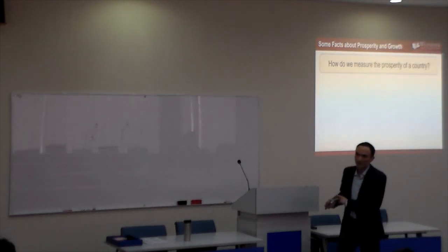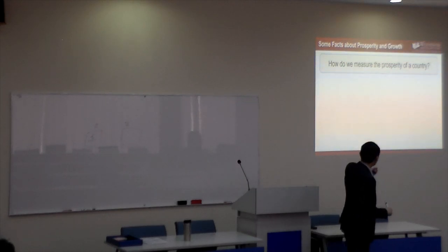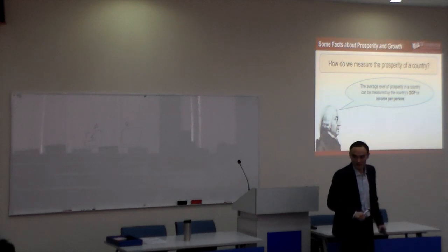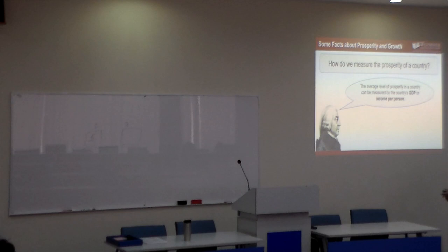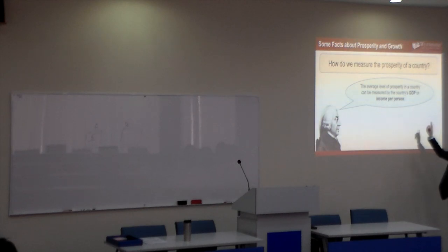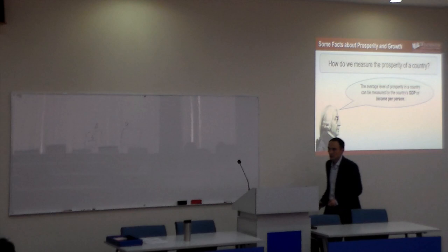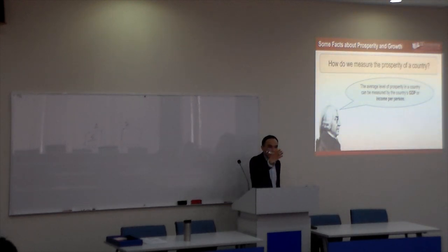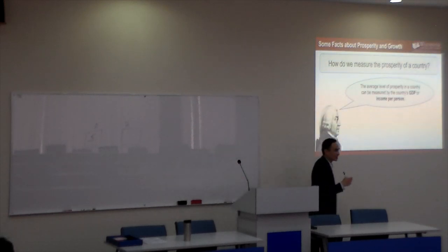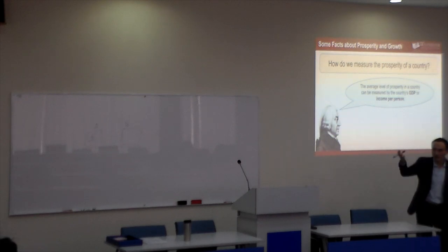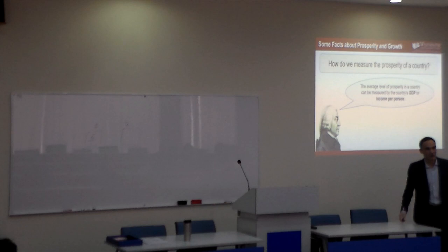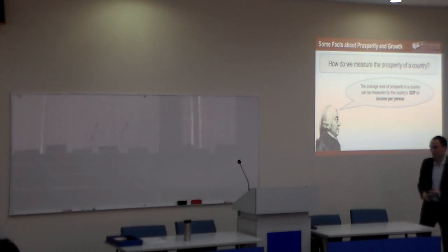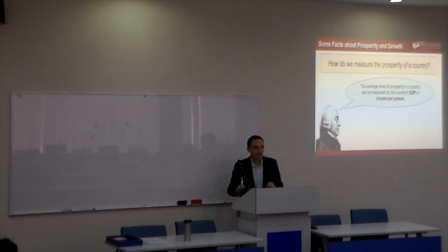How do we measure the prosperity of a country? Every level of prosperity in a country can be measured by a country's GDP, or income per person. When we want to know whether a country is doing economically well or not, we look at GDP per capita. If per capita is high, that country is doing economically well and people are living nicely. If it's low, we consider that country's people to be relatively poor.